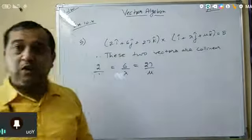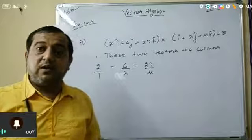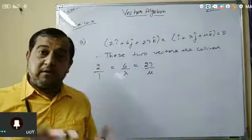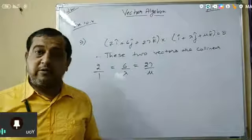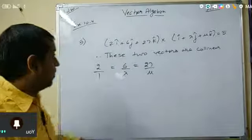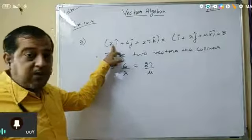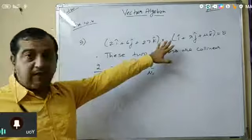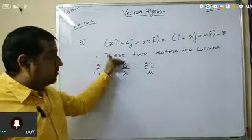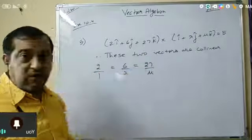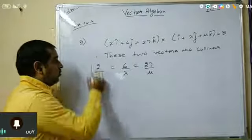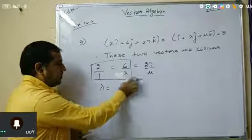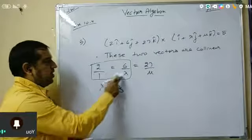If the vectors are collinear, it means one vector will be a scalar multiple of the other. So we look at the proportionality of i, j, k coefficients. The first vector has coefficients 2, 6, 27 and the second has 1, lambda, mu. Setting up proportions: 2 by 1 equals 6 by lambda gives lambda equal to 3, and 2 by 1 equals 27 by mu gives mu equal to 27 by 2.